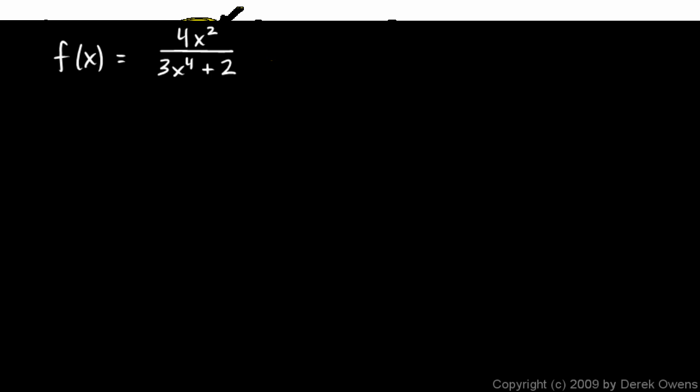A huge number on the bottom makes the value of the fraction smaller. The bigger x gets, the bigger the denominator gets, and it's getting bigger faster than the numerator. So the fraction is headed towards 0. We can write that with limit notation: the limit as x approaches negative infinity and the limit as x approaches positive infinity both equal 0.